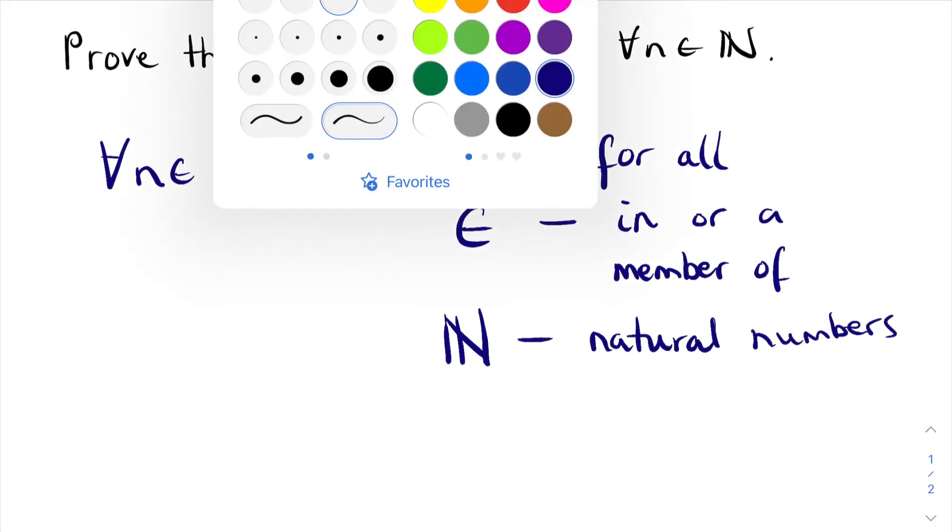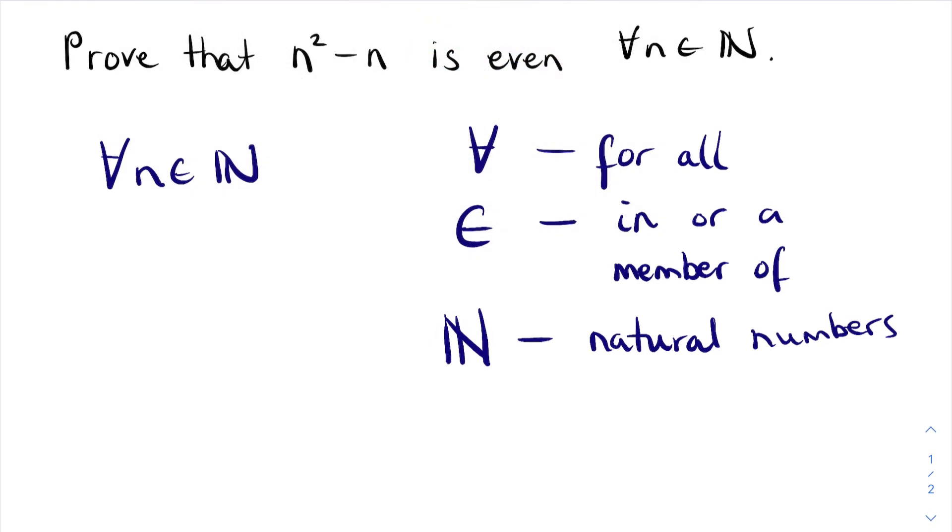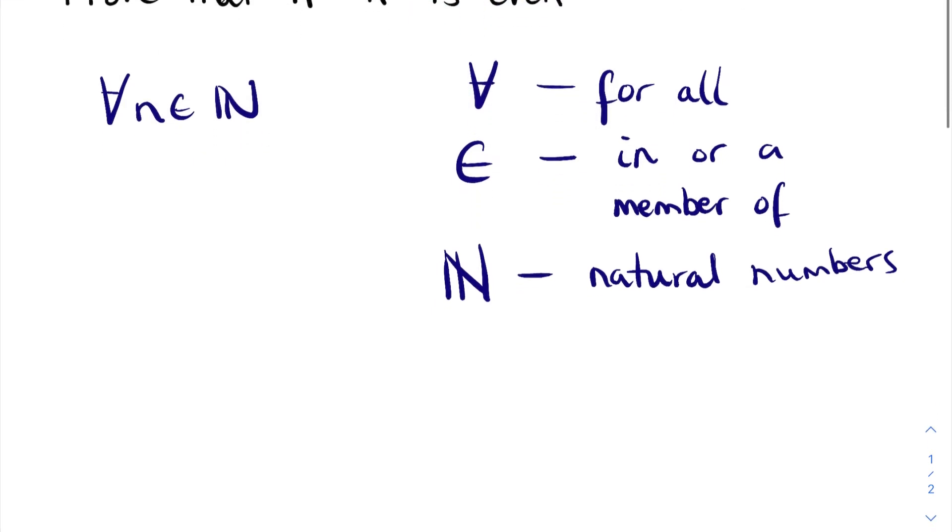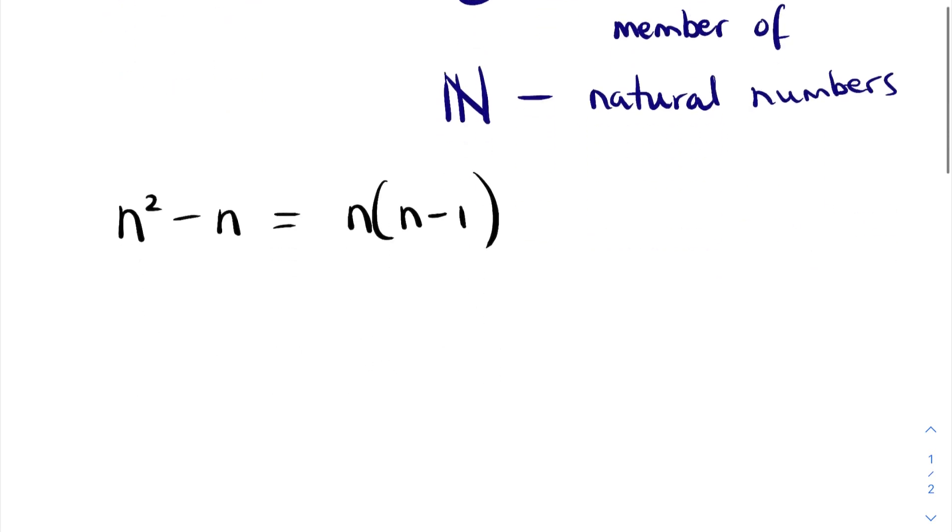So we have this n squared minus n and I have to prove that it's even. Now the way I do this is to write n squared minus n as n multiplied by n minus 1. Now these are two consecutive integers.